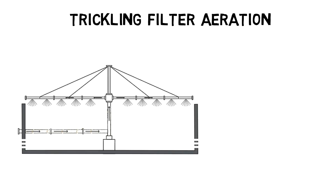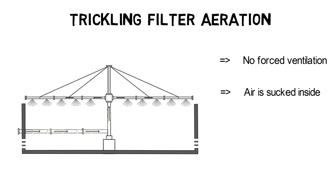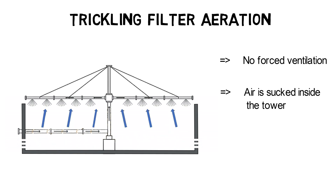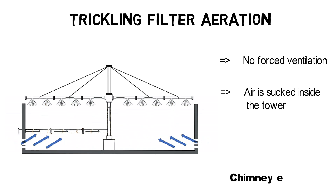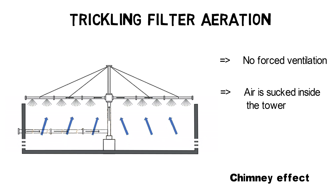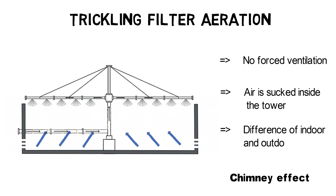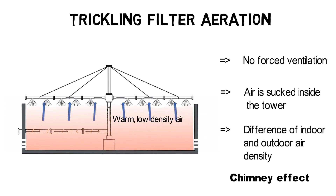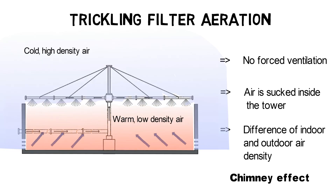Trickling filters operate under aerobic conditions, but mostly without the use of forced ventilation or aeration. Instead, the tower shape of trickling filters causes air to be sucked inside the tower over slots at the bottom. This effect is called the chimney effect and results from air buoyancy, which occurs due to a difference in indoor to outdoor air density, resulting from temperature and moisture differences.